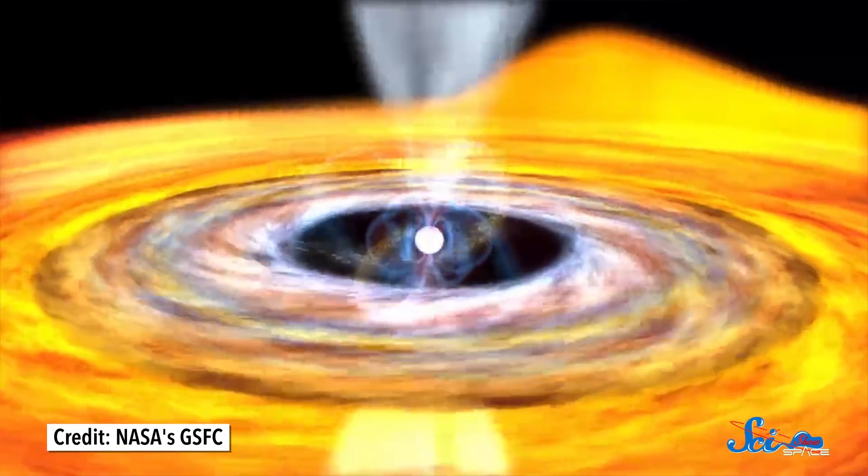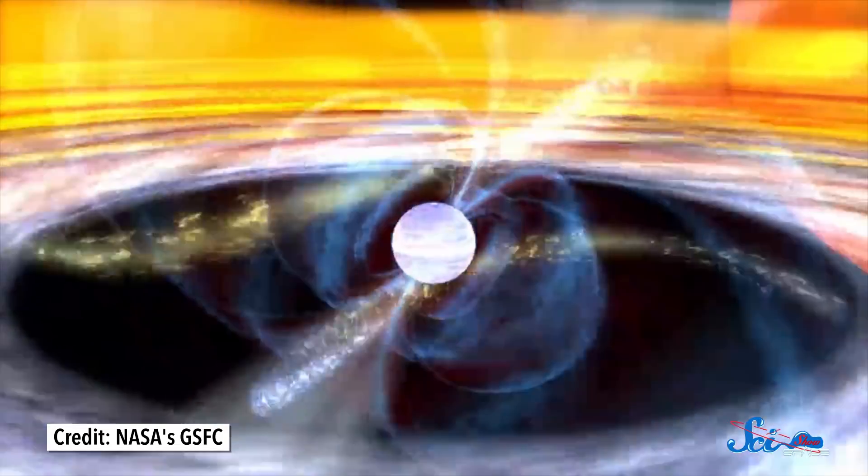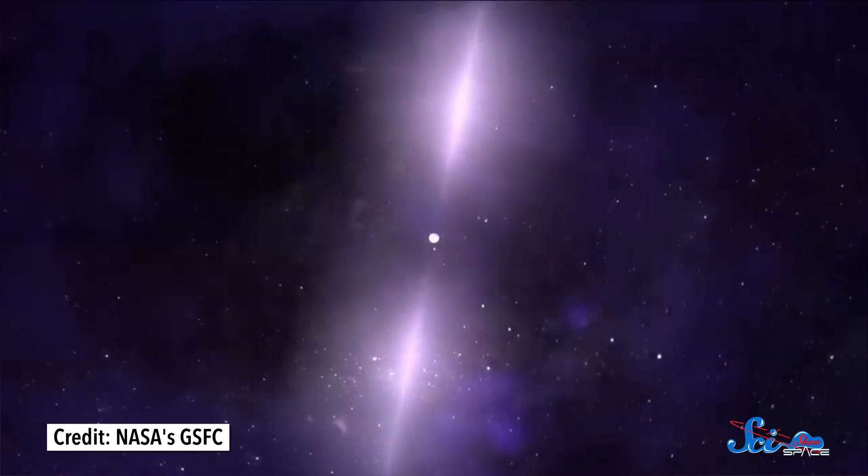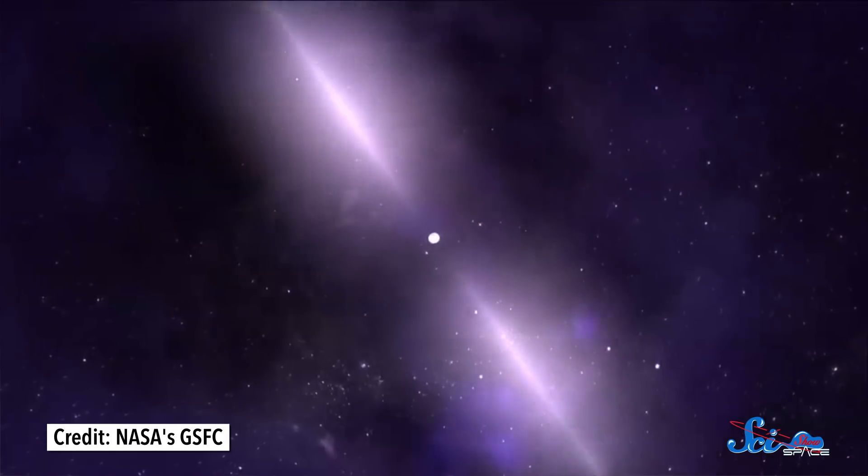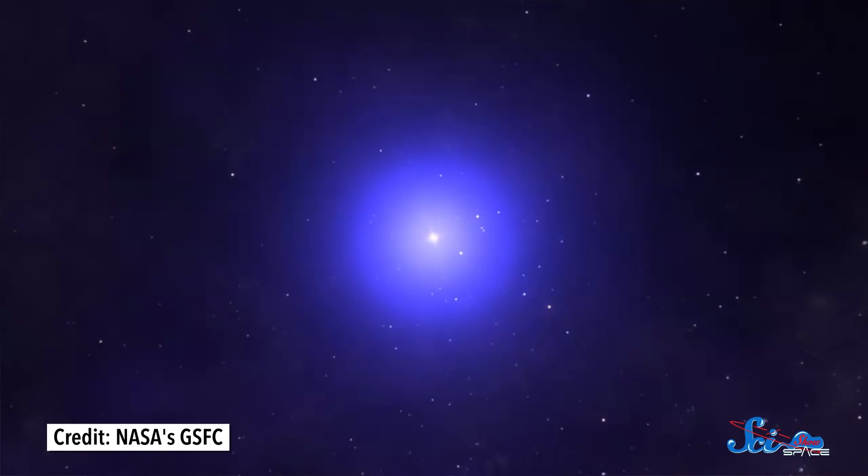Pulsars form when massive stars die. After a star explodes as a supernova, it can leave behind a collapsed core made mostly of neutrons, a neutron star. When one of these objects spins fast enough and emits enough radiation, we see it from Earth as a pulsating light. And we officially call it a pulsar.